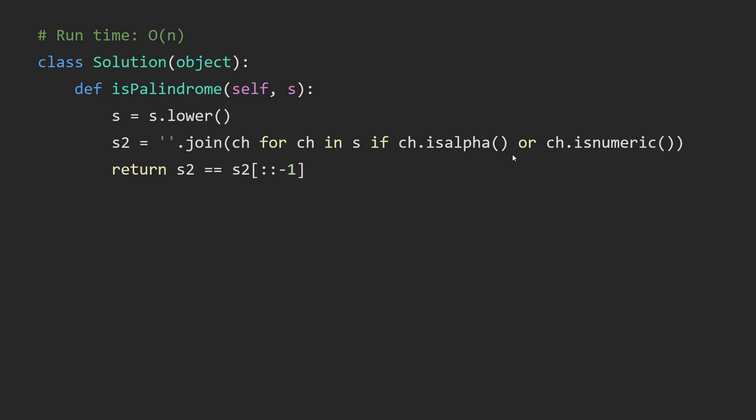This right here will loop through the string, and it will save the character into a list if that character is alphabet or is a number. So basically, this right here will get rid of all non-alphabet characters like the colon.